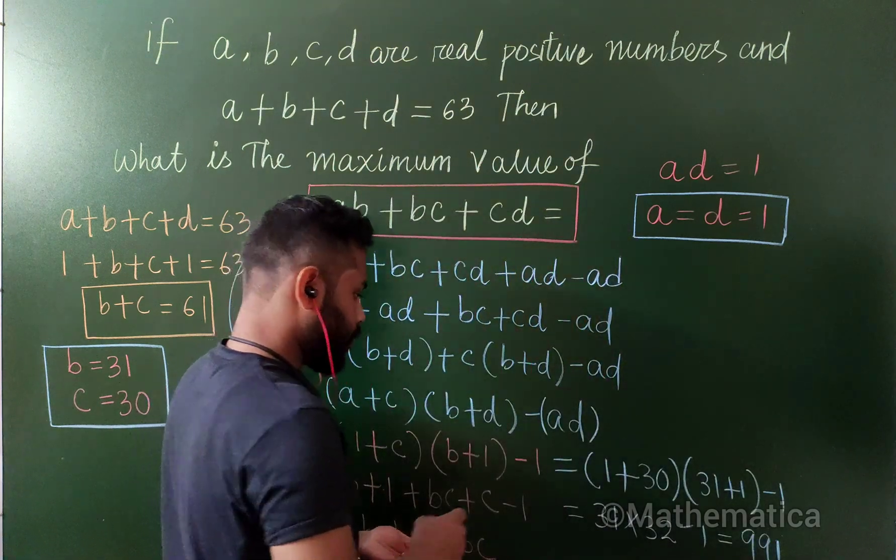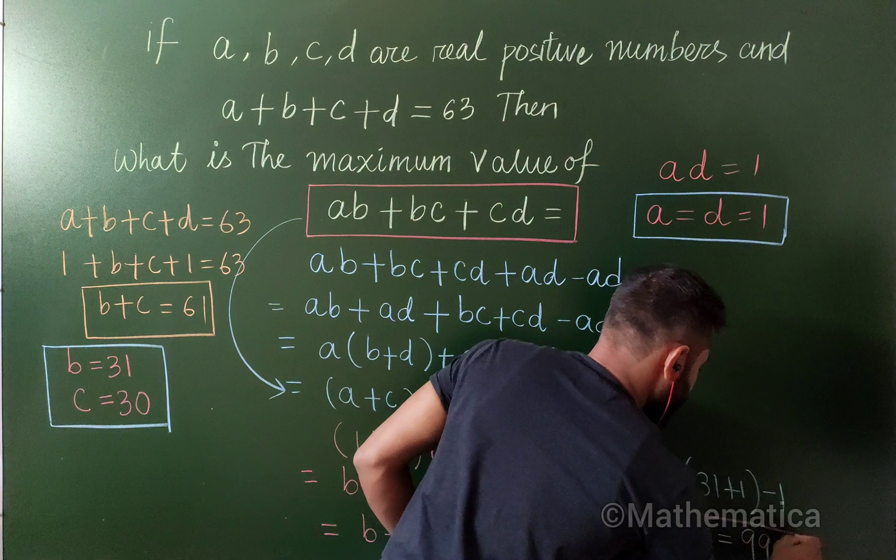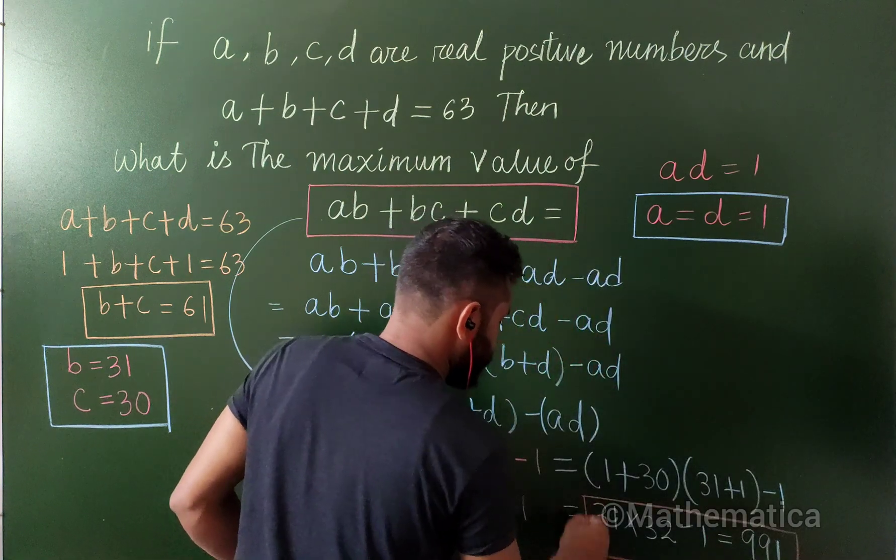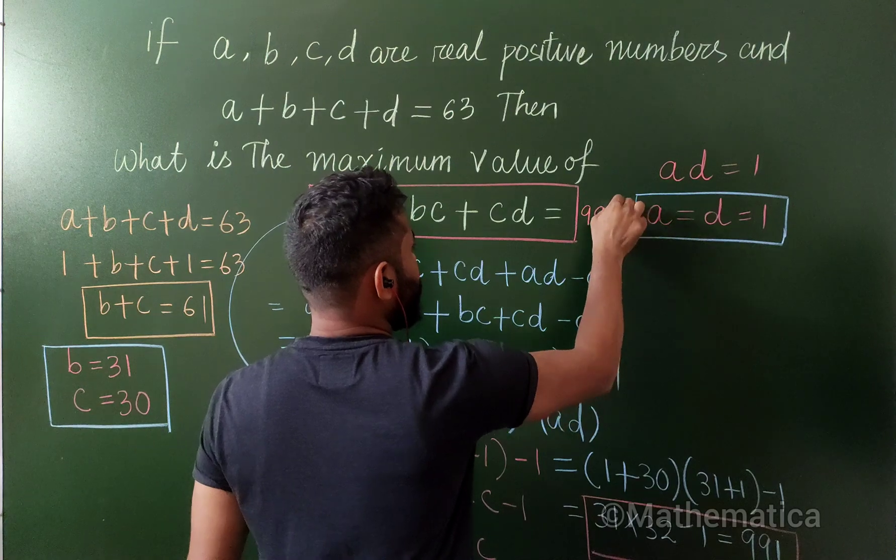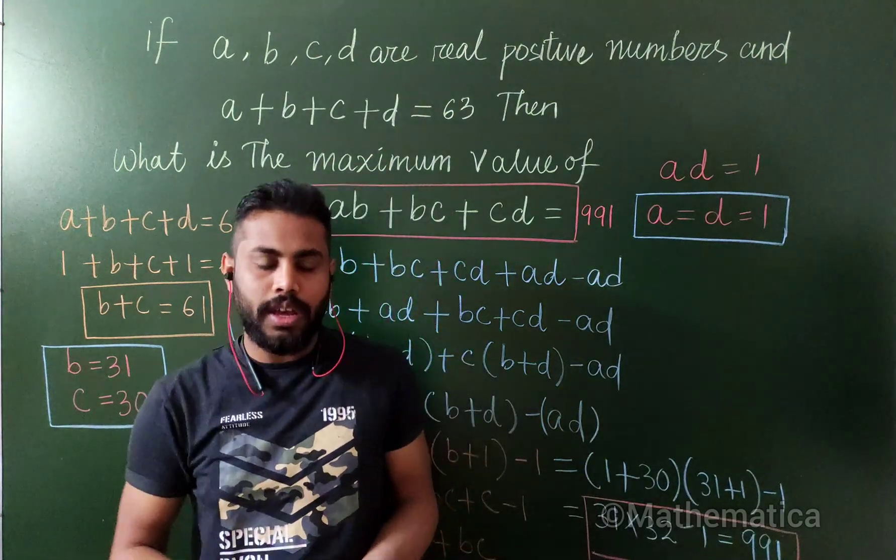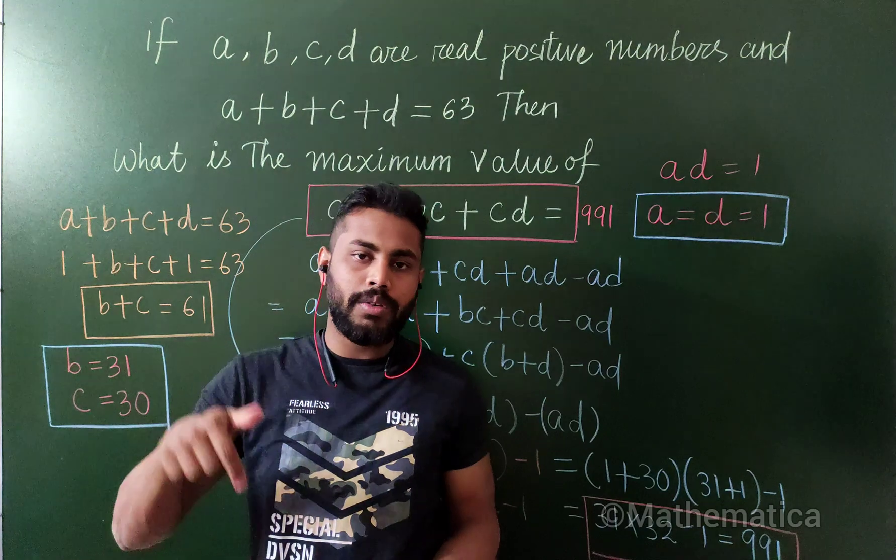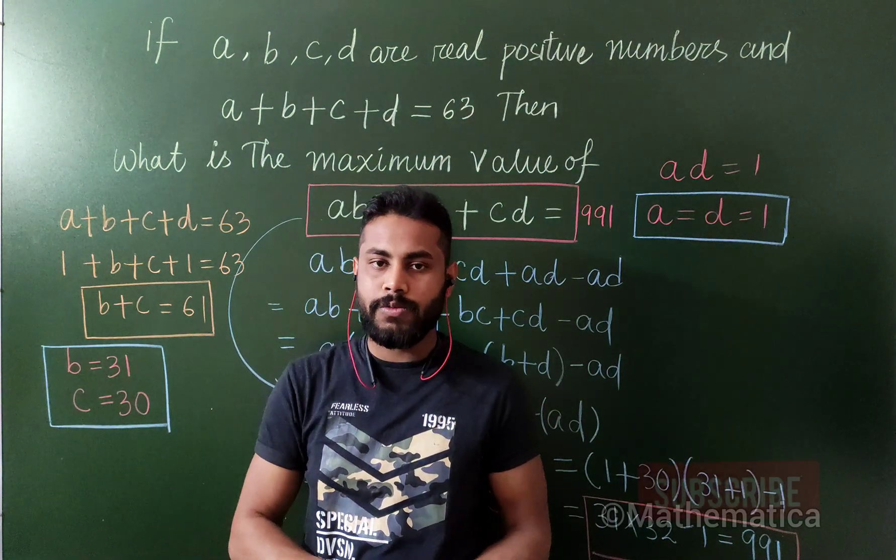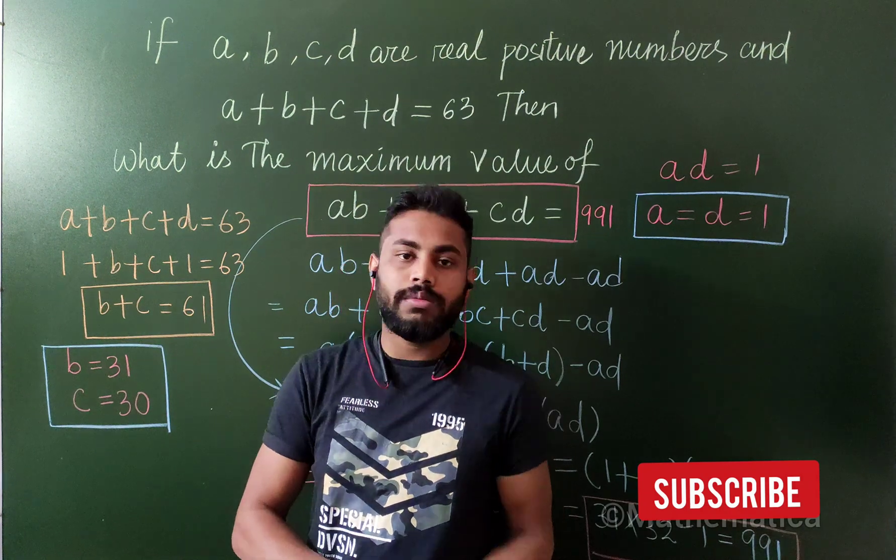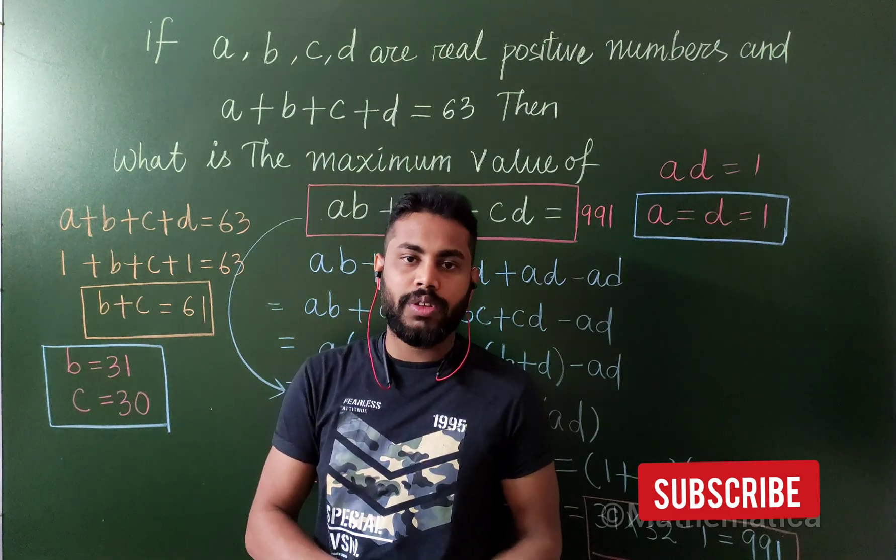This is the final value. 991 is the maximum value we can achieve. The maximum value of this one is 991. Hope you like this one, and if you have any other alternative method, then comment down in the description and definitely I would like to try that one in my next video. Till then, take care. Bye bye. See you with the next video.